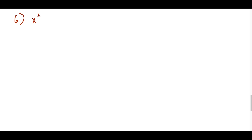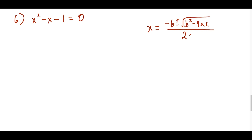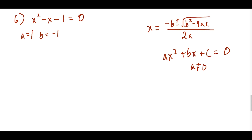The next type is when all other factoring techniques don't work — when you can't find two numbers with the required sum and product. In my opinion, the most reliable method is the quadratic formula, though it's my last resort because it takes more time. It works for ax² + bx + c = 0 where a ≠ 0. Here a = 1, b = -1, c = -1.